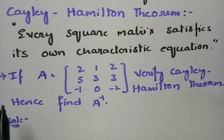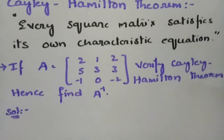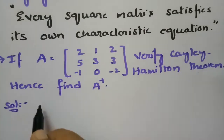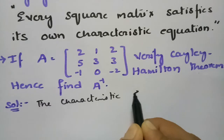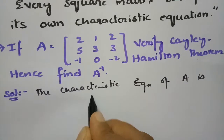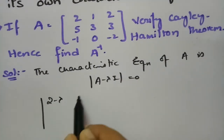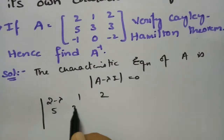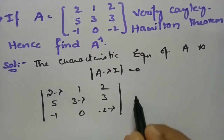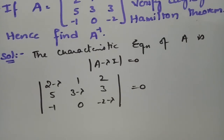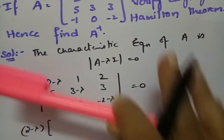Here is the most important problem. The matrix A is given and we are asked to verify the Cayley-Hamilton theorem and hence find A inverse. First of all, we need the characteristic equation. The characteristic equation of A is: modulus of (A minus lambda I) is equal to 0.